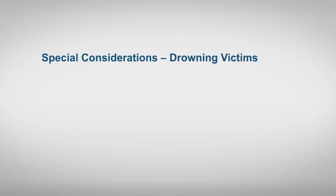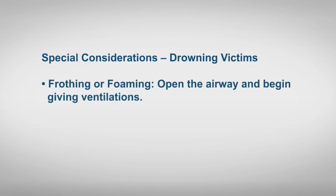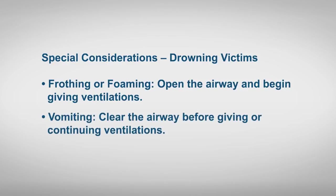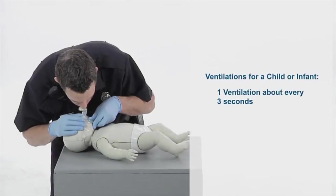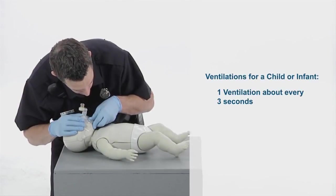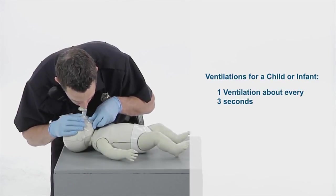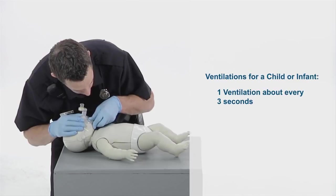Common complications of a drowning incident include frothing or vomiting. If you see froth, open the airway and continue giving ventilations. If the victim vomits, clear the airway before giving or continuing ventilations. You will learn how to clear a victim's airway later in this course. When giving ventilations for a child or an infant, the rate changes to one ventilation about every three seconds.